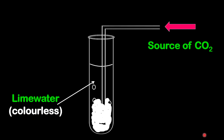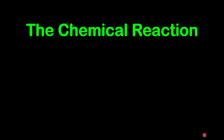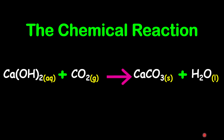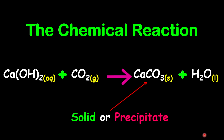Here is a little additional information: the chemical reaction for this test involves calcium hydroxide, which is lime water and is aqueous, reacting with carbon dioxide, which is a gas, to produce calcium carbonate, which is solid, and also water. What forms that white solid is the calcium carbonate, and you can classify that as a precipitate — it will settle to the bottom of the flask over time.